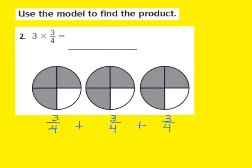Now if I were to add those together, here's what I know: 3 plus 3 is 6, and 6 plus 3 is going to give us 9. So that tells me I would end up with a numerator of 9. And remember, your denominator stays the same, so it would be 9 fourths. So I know that 3 times 3 fourths is going to be 9 fourths.